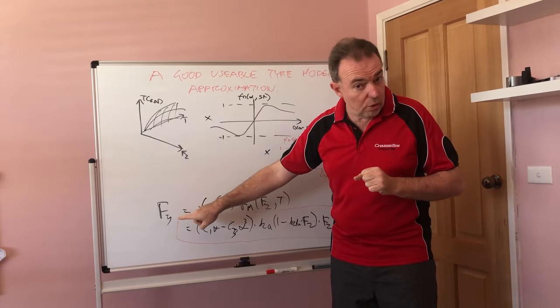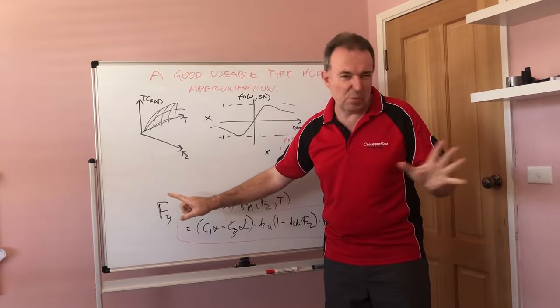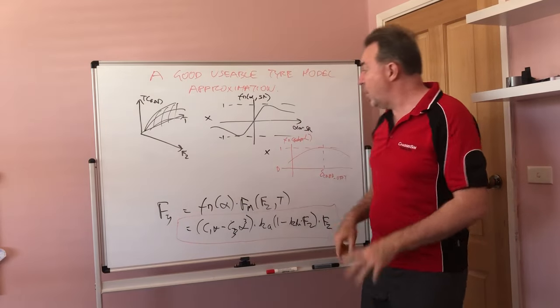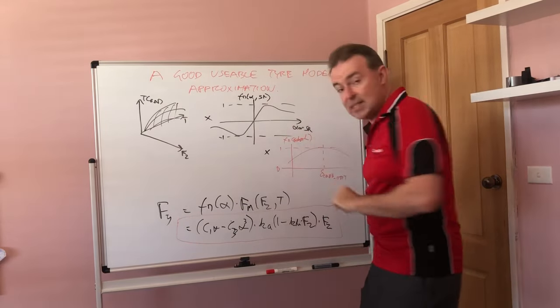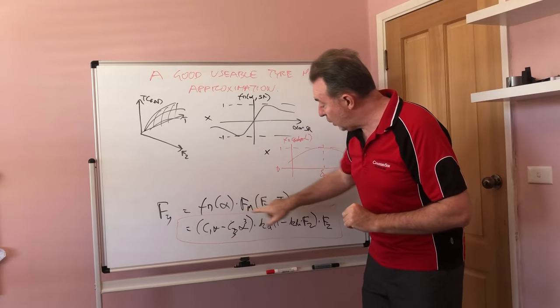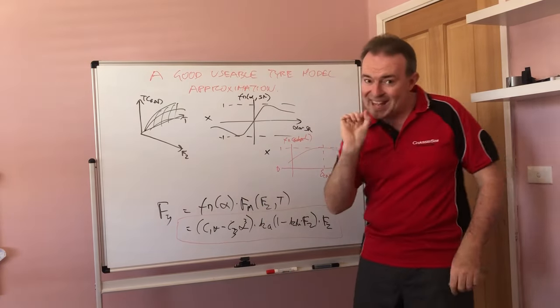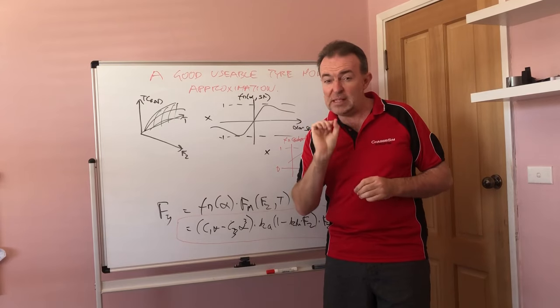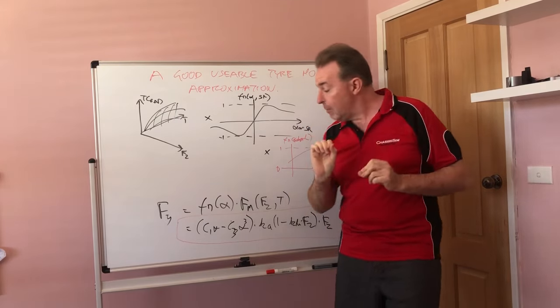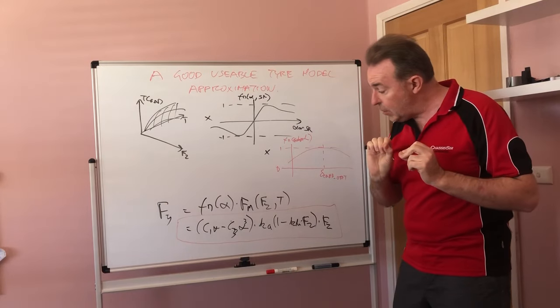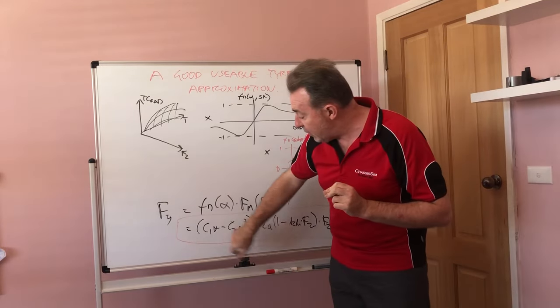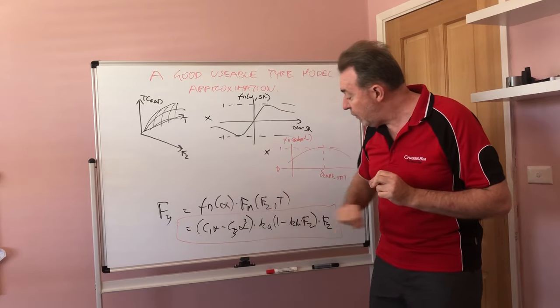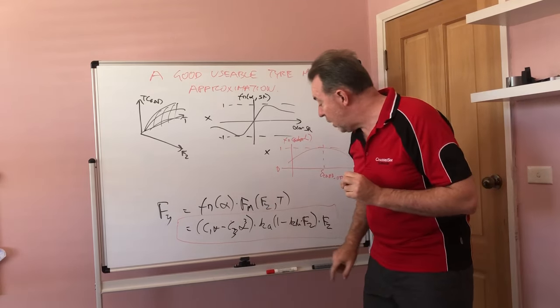Here's the money shot. A really simple approximation of your tire model is: your lateral force Fy is a function of alpha where we've combined this and this together multiplied by the traction circle radius. Here's something that's even better, even a tad simpler for you.